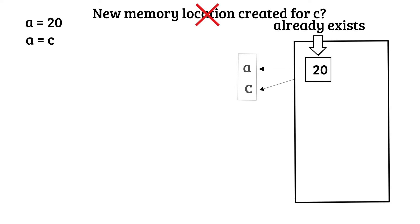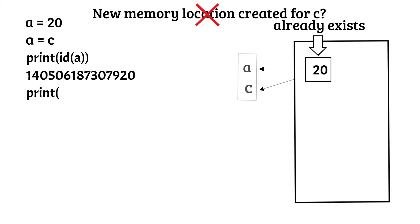I hope that this is clear. So now, if you compare the memory location of A and C, then as you can see, both are pointing to the same memory address. This is because, as I mentioned earlier, both the variables are pointing to the same integer object stored in the memory.